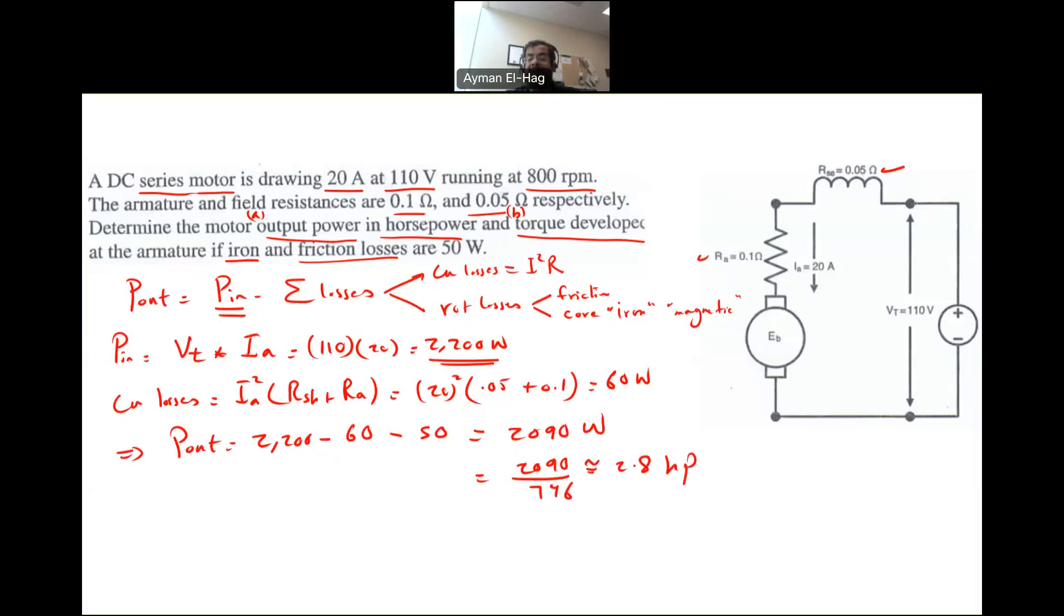The second, we want to find the developed torque. So basically, P developed is equal to torque developed times omega. If I want to find the output torque, then it will be P out torque out times omega. So it depends which torque I'm looking for. Since the question asks for the developed torque, I will be using this formula.